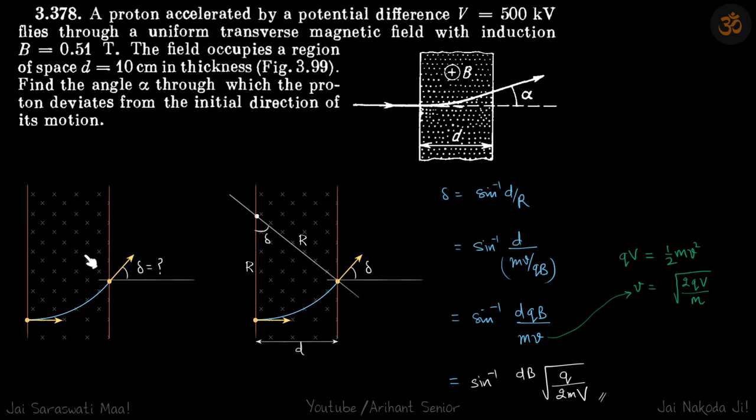So inside the magnetic field, because the field is perpendicular to velocity, the proton will travel in a circular path and let's say its radius is r. So we know that this radius is given by mv by qb.